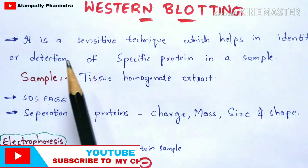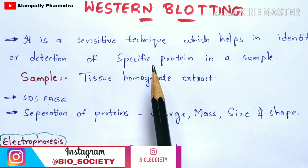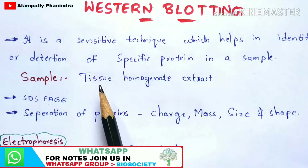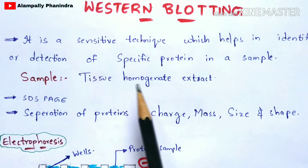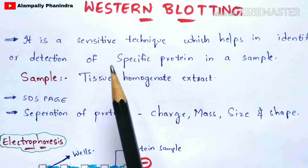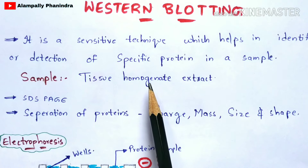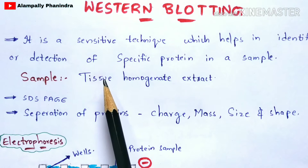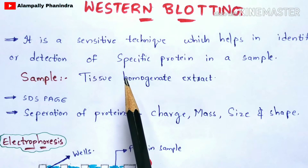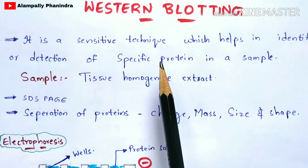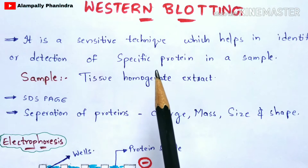Western blotting is a sensitive technique which helps in the identification or detection of a specific protein in a sample. The sample used here as an example is tissue homogenous extract — that is, cell aggregates extracted from tissue. The sample must consist of a group of proteins, and from that group you are going to identify a single specific protein.